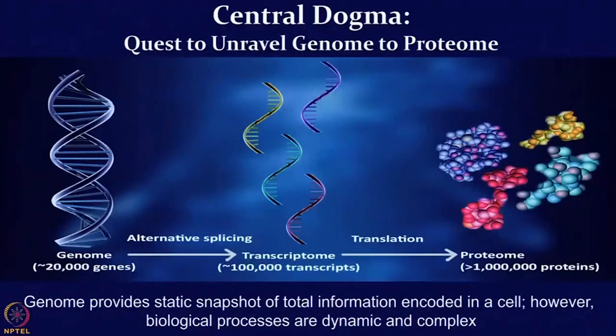As you are aware, the central dogma — the basic biomolecular workflow — starts from genes to transcripts and proteins. The entire field which aims to study all the genes of a given organism is known as genomics, and all the genes which constitute the organism is known as the genome. Likewise, all the transcripts we study in the field of transcriptomics, and all the proteins we study in the field of proteomics. As you can see in the slide, the genome provides only a snapshot of the total information encoded in a cell, but biological processes are very dynamic and complex, governed by transcripts and proteins which change in response to the dynamic behavior of the cell.